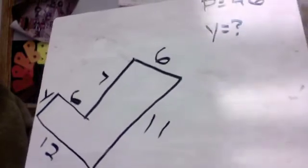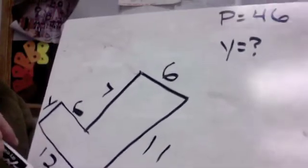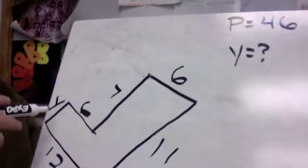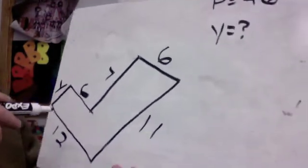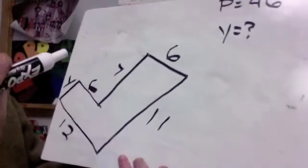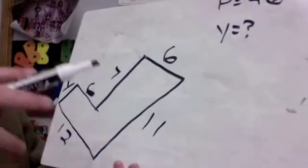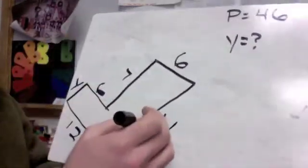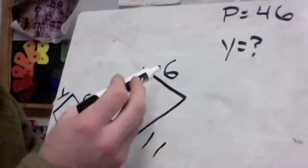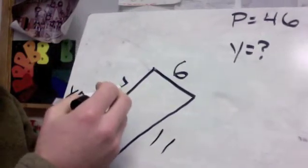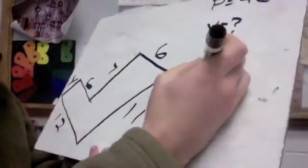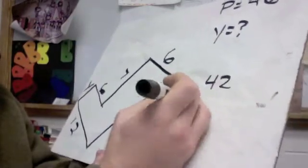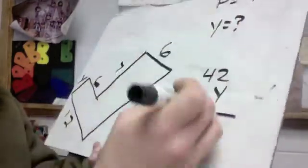All right, for this next one we've got a perimeter of 46 for this shape. They give us the perimeter. We've got almost every side except for the y side. We have to figure out what the y side equals up to. So like we did in the last one, the easiest way I can think of to do this is just to add everything up and then see what the leftover amount is to get to 46. So 12 and 11 is 23. 23 and 6 would equal 9 so it would be 29. 29 and 7 is going to be 36 plus another 6 is going to be 42. We started with 46.